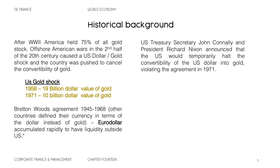After 1968, U.S. Treasury Secretary John Connally and President Richard Nixon announced that the U.S. would temporarily halt the convertibility of the U.S. dollar into gold, violating the agreement in 1971. And 'temporarily' means — temporarily is still today. It was basically a dollar default, because if you cannot redeem those papers into real gold, you're basically defaulting.